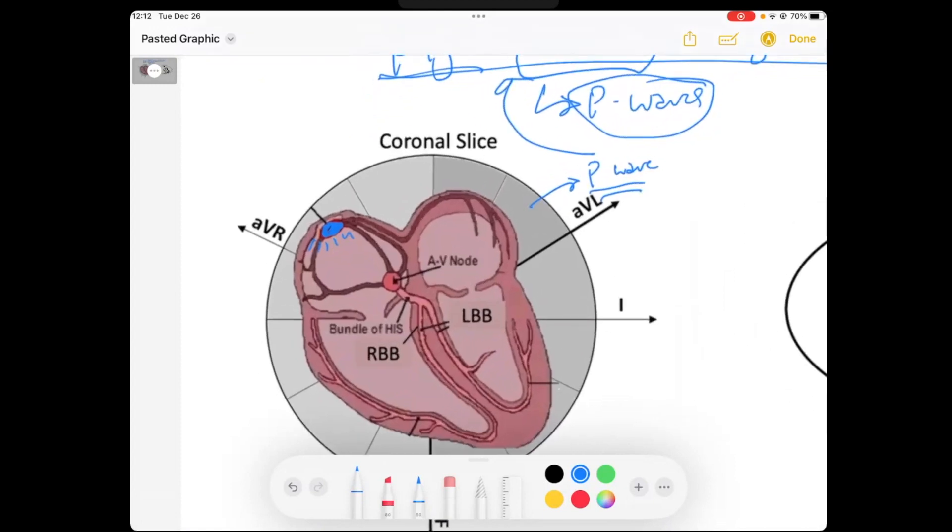What's interesting is that when the SA node here in the upper right corner of our heart fires, it actually depolarizes the right atria first in this fashion, and then through this channel called Bachmann's Bundle, this electrical activity actually spreads to the left atria. And then the left atria is going to depolarize.